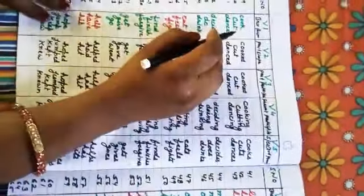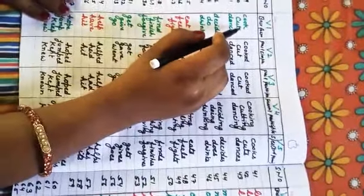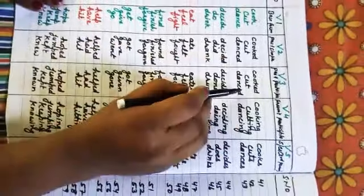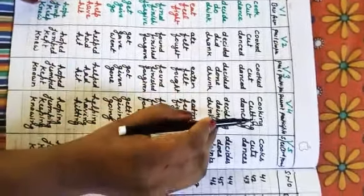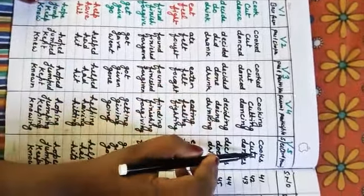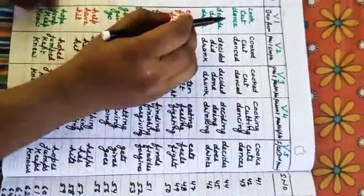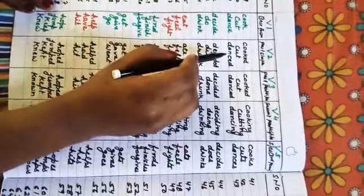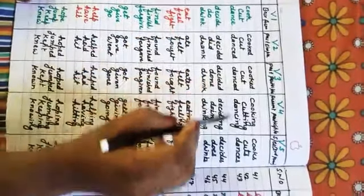Cook — meaning 'khana banana' (to cook). Second form: cooked. Third form: cooked. Fourth form: cooking. Fifth form: cooks. Cut — meaning 'katna' (to cut). Second form: cut. Third form: cut. Fourth form: cutting. Fifth form: cuts.